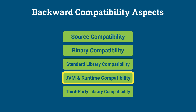JVM and runtime compatibility. Java 11 maintains compatibility with Java 8 in terms of the Java Virtual Machine (JVM) and runtime behavior, ensuring that applications written for Java 8 behave similarly on Java 11. For example, applications that rely on specific JVM behaviors or runtime features in Java 8 will continue to work as expected on Java 11.